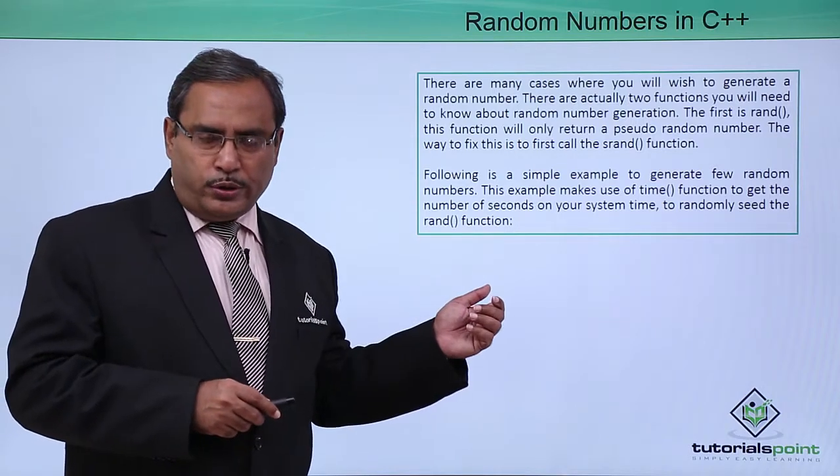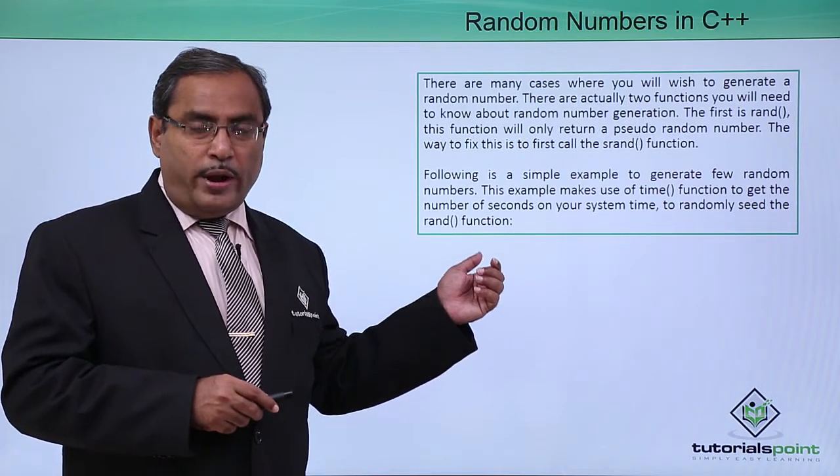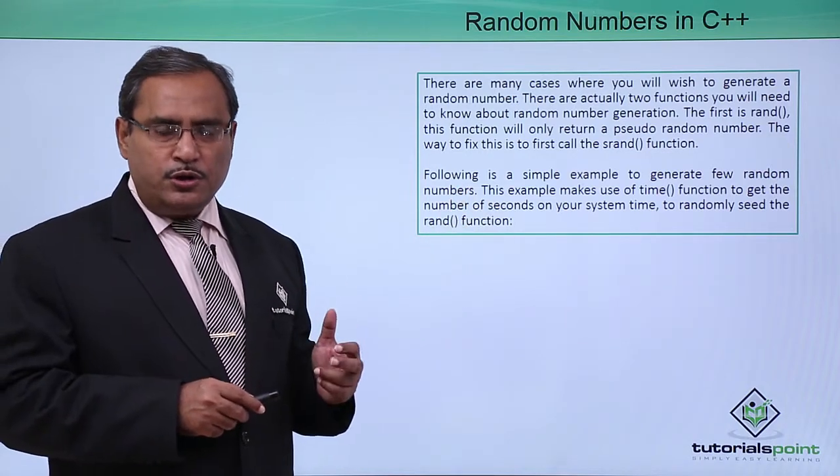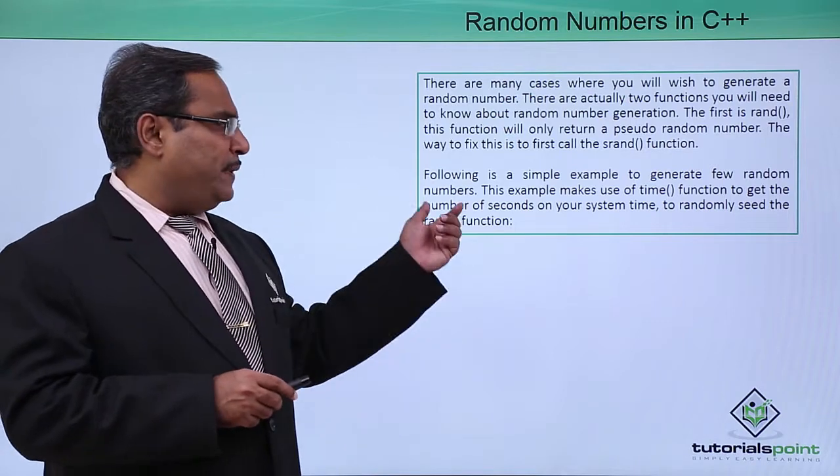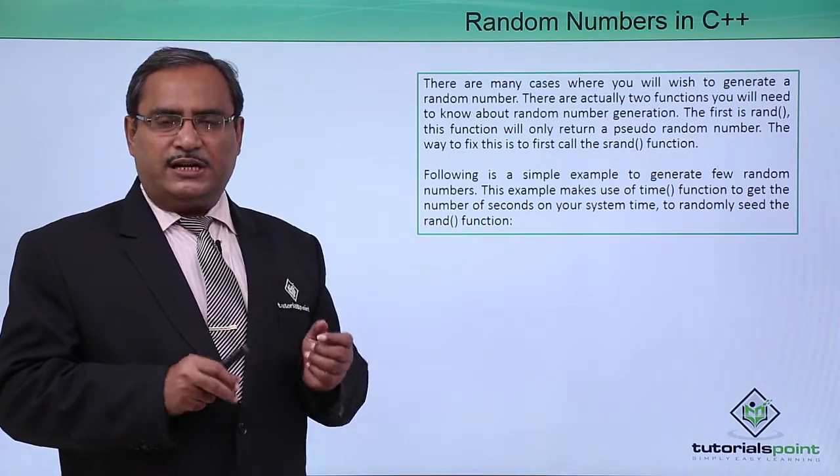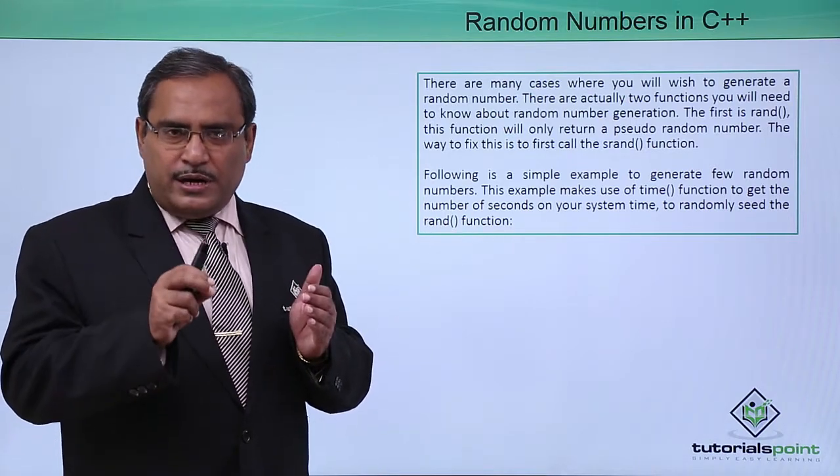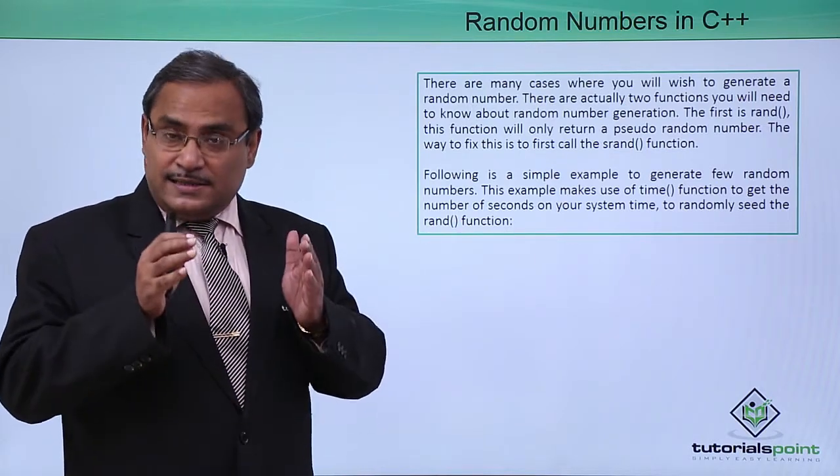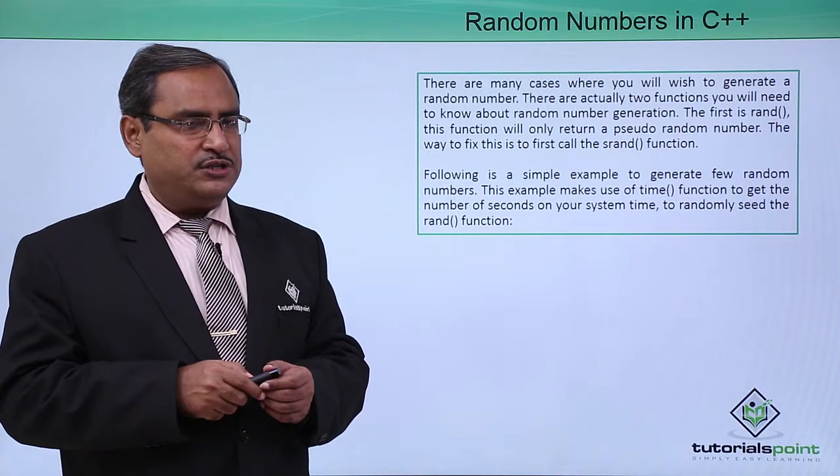Here we are going to show you one C++ code where srand and rand, these two functions, we have used to generate random numbers. In case of srand, we have used the function time which will calculate the number of seconds in our system to generate the seed value for the srand function.